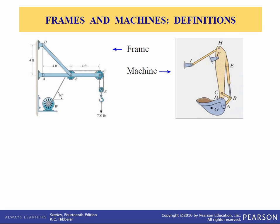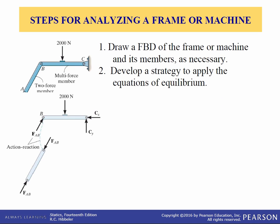Frames and machines are two types of structures which are often composed of pin connected multi-force members — that is, members subjected to more than two forces. Frames are used to support loads, whereas machines contain moving parts and are designed to transmit and alter the effect of forces. Provided a frame or machine contains no more supports or members than necessary to prevent collapse, the forces at joints and supports can be determined by applying the equations of equilibrium to each member. Once these forces are obtained, it is possible to design the size of the members, connections, and supports using the theory of mechanics of materials.